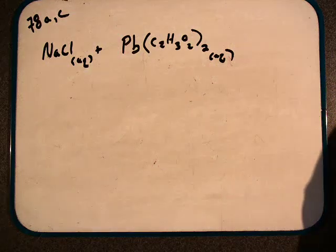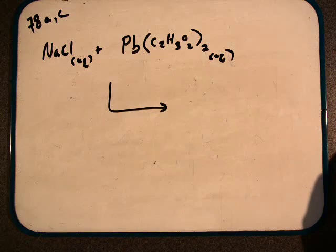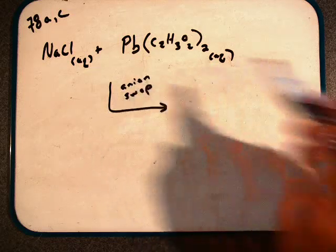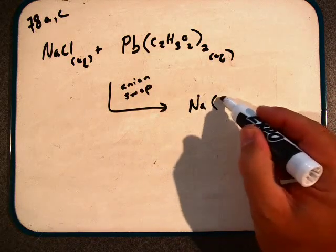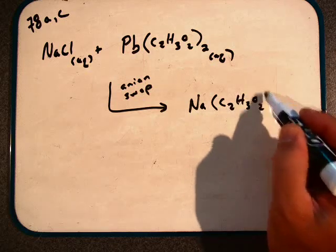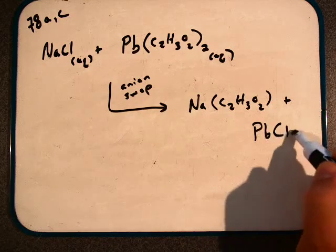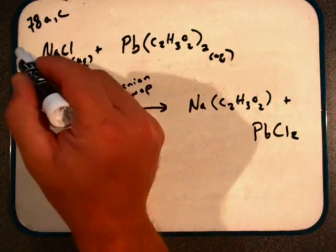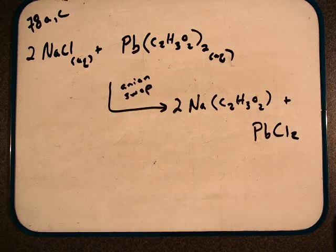We have these two aqueous species reacting with each other. To predict whether we have a reaction, we want an anion swap. We would have sodium acetate as one product and lead chloride as another possible product. To balance these out, we need two sodium chlorides and two sodium acetates.